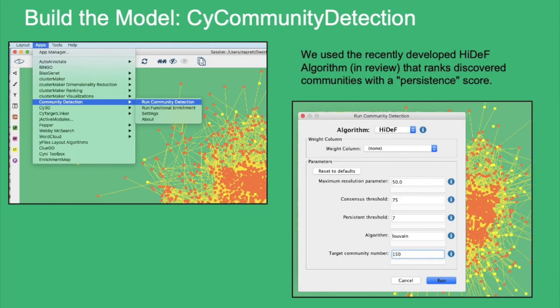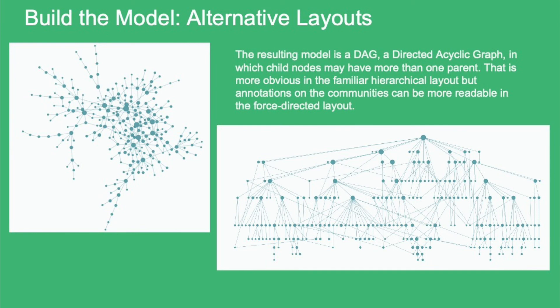We are using CDAPS, a recently released Cytoscape app, to build the hierarchical model. We are using the Hi-Def Community Detection algorithm, recently developed by Fan Zhang — Fan will be available for discussion today. CDAPS is built with the ecosystem in mind: the algorithms run on a remote web service, not inside Cytoscape, which means they can be easily used by other applications. Here are two views of the resulting model — different arrangements of the hierarchical structure. Each community discovered by Hi-Def is a subnetwork in the input interaction network, and the set of proteins in that subnetwork.